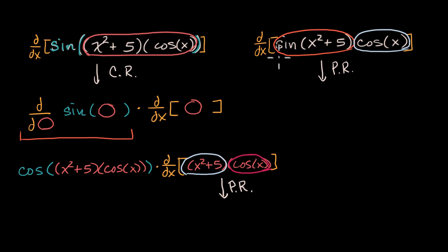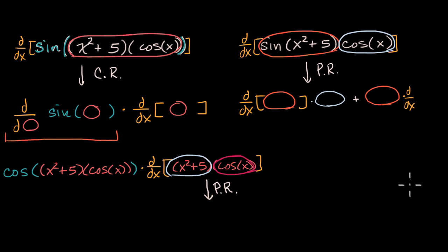And so that tells me that this is going to be the derivative with respect to x of the first expression, just gonna do that with the orange circle, times the second expression, I'm gonna do that with the blue circle. Plus the first expression, not taking its derivative, times the derivative with respect to x of the second expression.